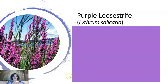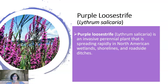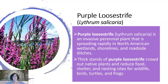The purple loosestrife is an invasive perennial plant that has spread rapidly in North American wetlands, shorelands, and roadside ditches. A perennial is one that does not need to be replanted every year — it just continues growing, unlike an annual plant which needs to be replanted. Thick strands of purple loosestrife crowd out native plants and reduce food, shelter, and nesting sites for wildlife, birds, turtles, and frogs.